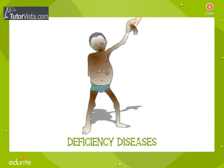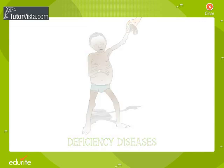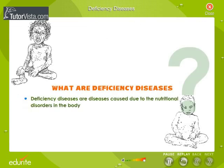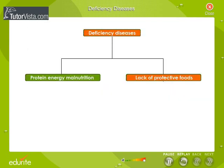Deficiency diseases are diseases caused due to nutritional disorders in the body. Deficiency diseases can be classified into two major categories: protein energy malnutrition and lack of protective foods.